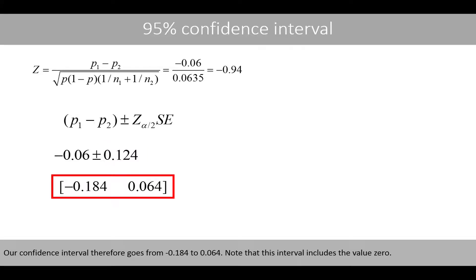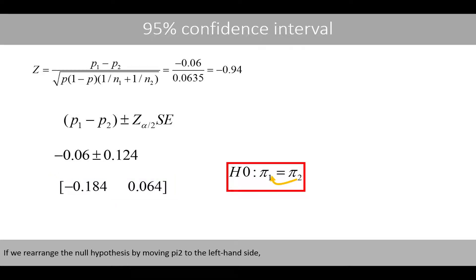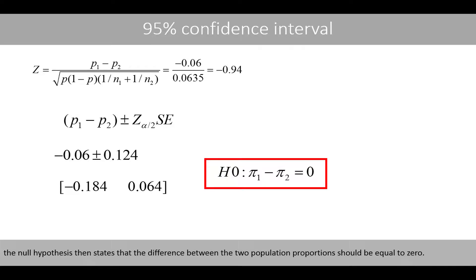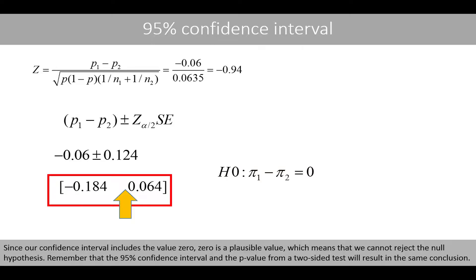1.96 times 0.0635 is approximately equal to 0.124. Our confidence interval therefore goes from negative 0.184 to positive 0.064. Note that this interval includes the value 0. If we rearrange the null hypothesis, it states that the difference between the two population proportions should equal 0. Since our confidence interval includes 0, it is a plausible value, which means we cannot reject the null hypothesis. Remember that the 95% confidence interval and the p-value from a two-sided test will result in the same conclusion.